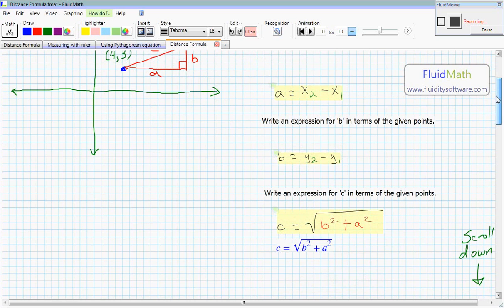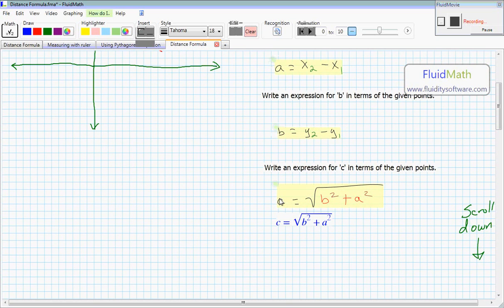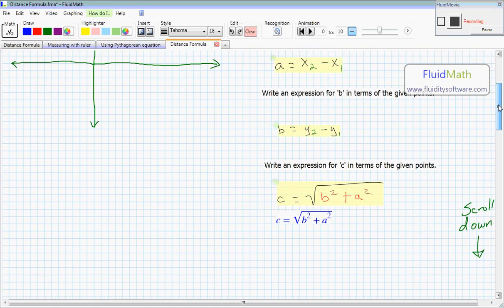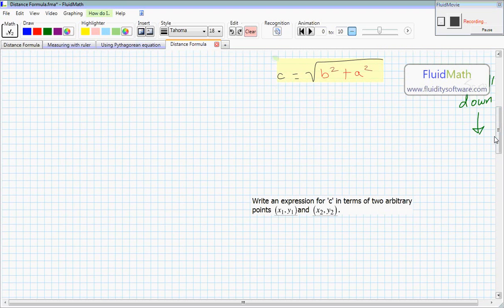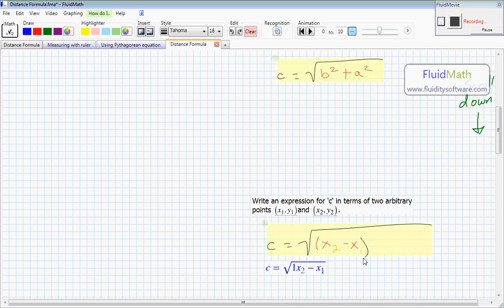So if this is what c is equal to, square root of b squared plus a squared, you can substitute this a and b in, and then we'll be getting what it's asking for down here. We'll say c is equal to the square root of x2 minus x1 squared plus y2 minus y1 squared.